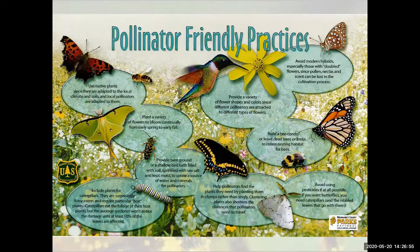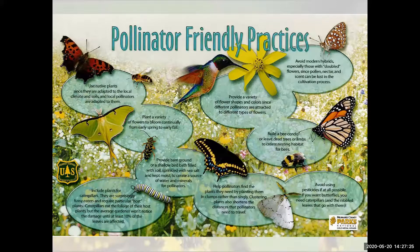Avoid modern hybrids, especially those with double flowers, since pollen, nectar, and scent can be lost in the cultivation process. Hybrids have kind of had the nectar and pollen hybridized out of them, so be aware of that. You can find that information in catalogs for flower seeds — they tell you whether a plant is deer resistant, the height, and whether they need sun.